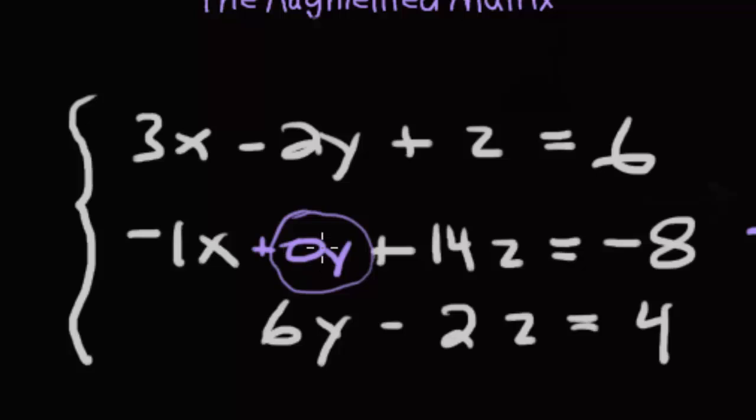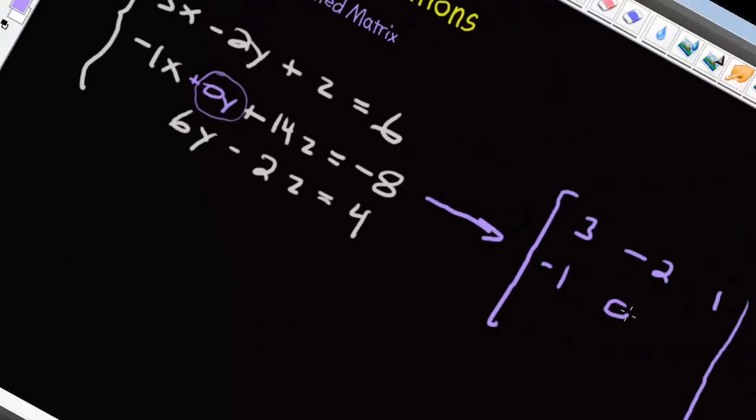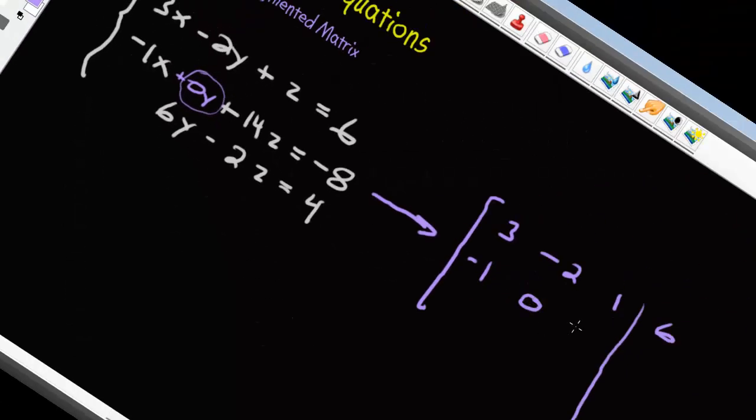But if it's 0y, we're just going to erase it, because we don't need to write that in. But just know that if there's no y, it's just a 0. And then the 14z, so we take the 14, and then that's a negative 8.